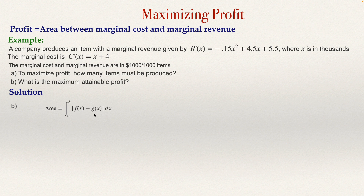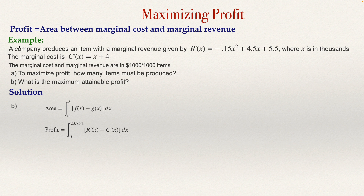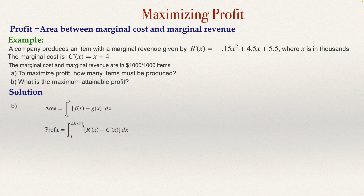To compute it, type the first (biggest) function — the marginal revenue, which is above the marginal cost — from zero to the point of intersection. So in our case, the total profit will be the integral from 0 to 23.754 of (marginal revenue minus marginal cost). To summarize: to get maximum profit, first find the intersection point between the marginal cost and marginal revenue — which is 23.754 in this example — then compute the integral from zero to that point of the difference between marginal revenue and marginal cost.